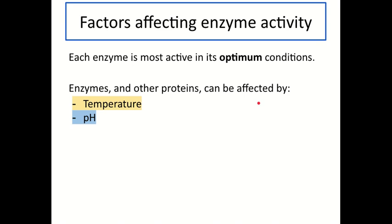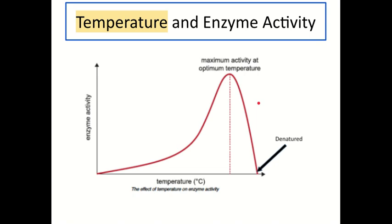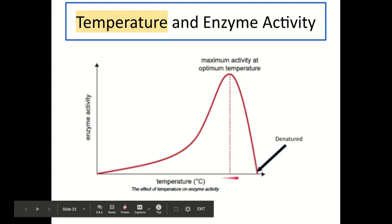Enzymes speed up chemical reactions, but these reactions can happen at different speeds, affected by factors that can alter an enzyme's activity. Each enzyme is most active at what we call its optimum set of conditions. You will often see enzyme-temperature graphs with this characteristic shape. This graph allows you to find out an enzyme's optimum temperature — the optimum is where the enzyme's rate of activity is highest, so we go to the highest point on the graph and read off the optimum temperature from the x-axis.